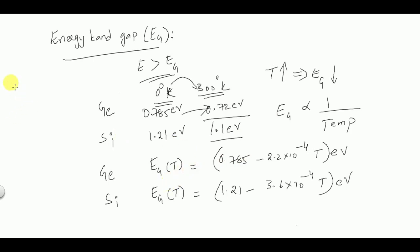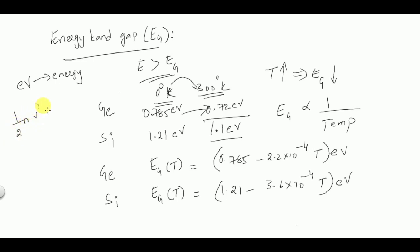Electron volt is the practical unit of energy in electronics. One electron volt is the energy gained by an electron moving through a potential difference of one volt. It represents the kinetic energy gained — or potential energy lost — by the electron, expressed as ½mv² = qV.